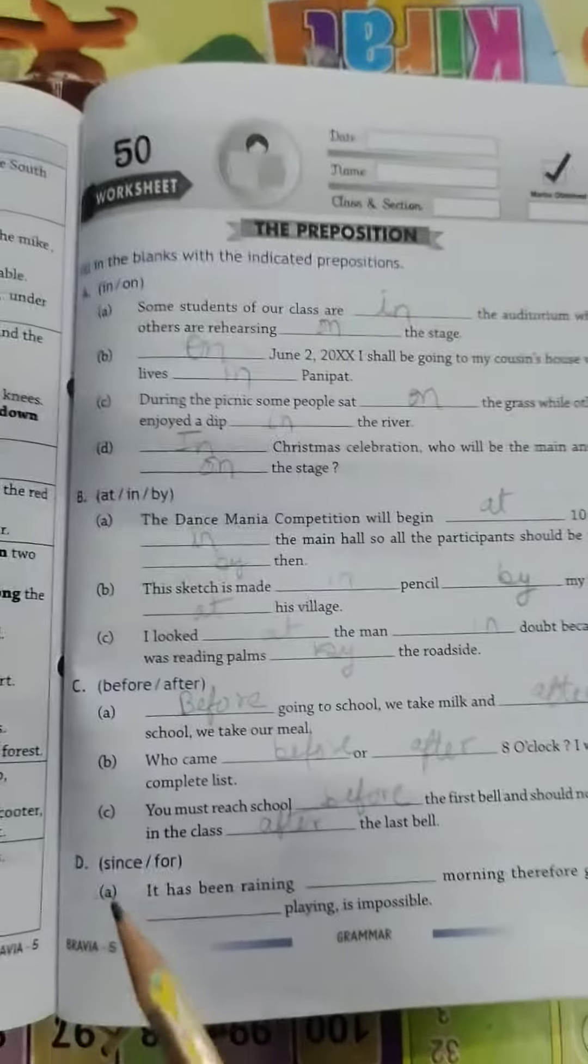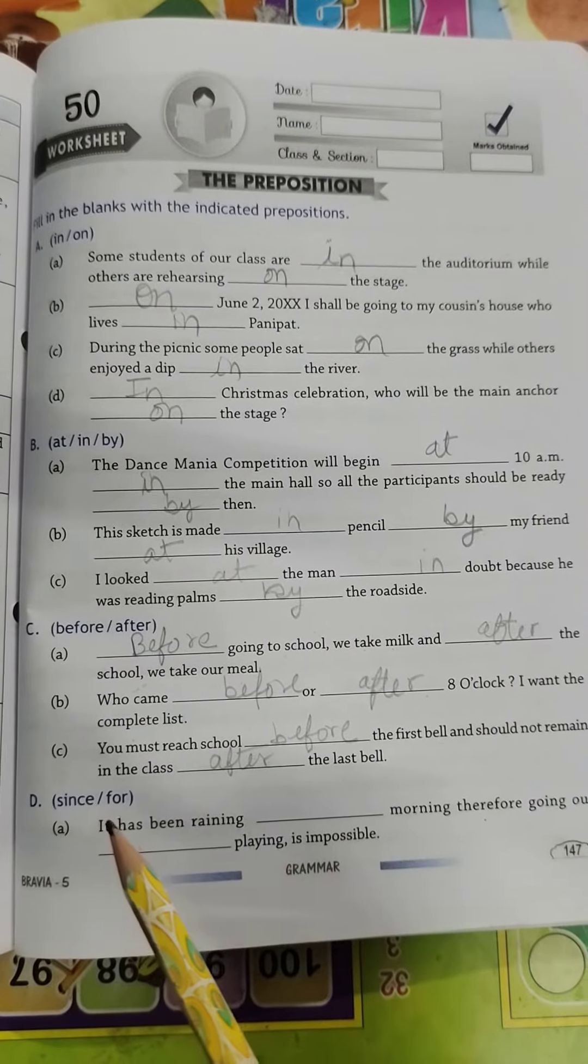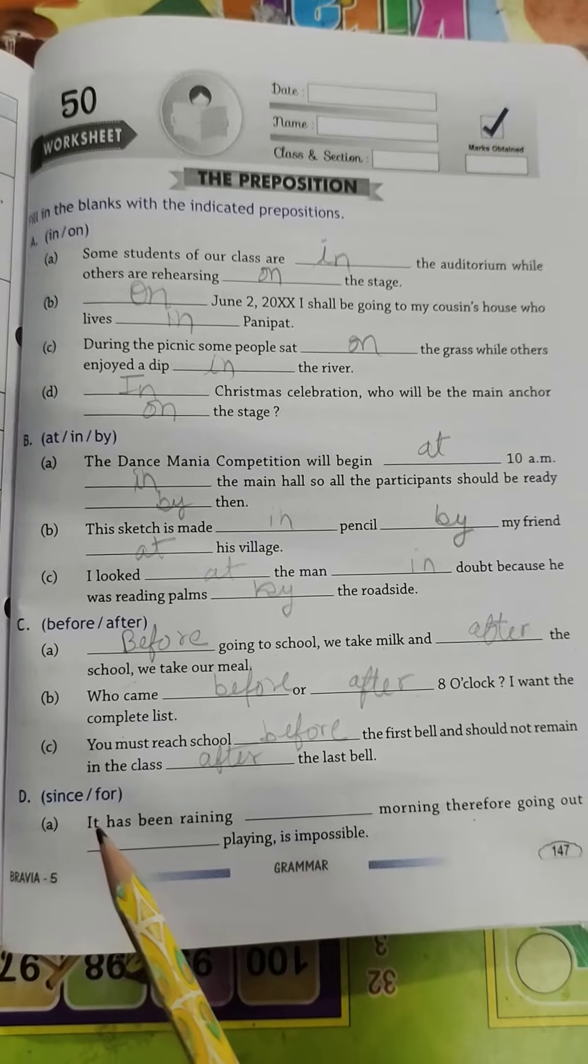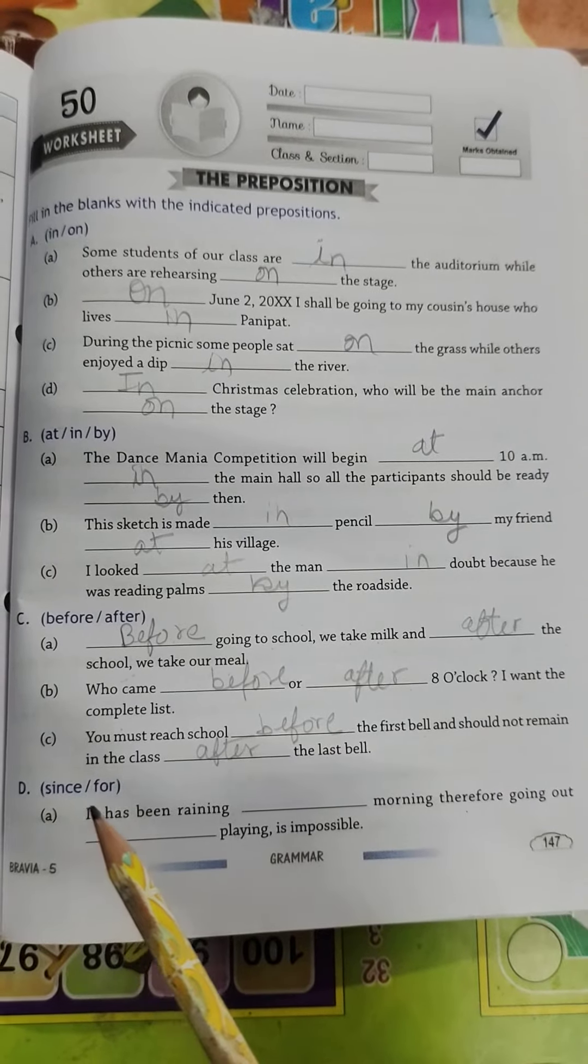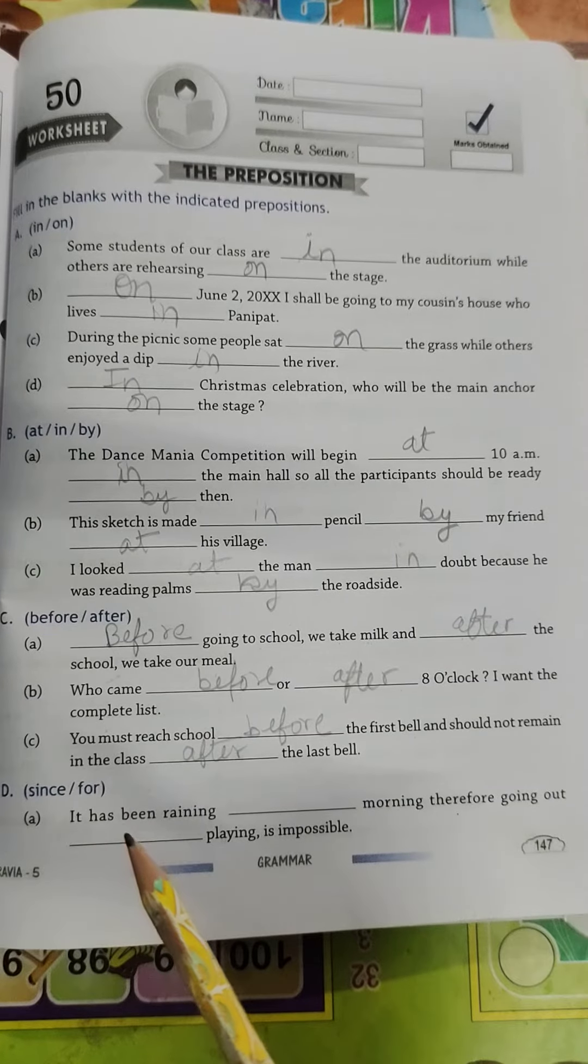Now, let's do part D of worksheet 50. We have to use prepositions since and for. I hope the prepositions since and for are clear to you. So, let's do it.